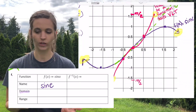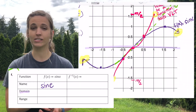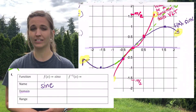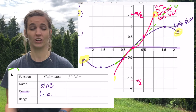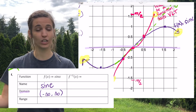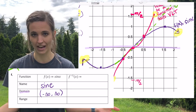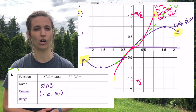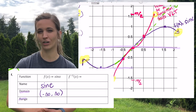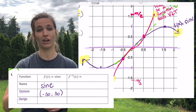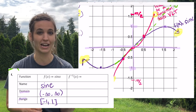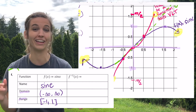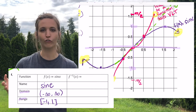So the graph of y equals sine of x — we know the name for that one is sine. We know that its domain would be negative infinity to positive infinity, because it's continuous across the whole x-axis. The range though: sine is alternating between negative 1 and 1, so I know that the range is going to be negative 1 to 1 inclusive.